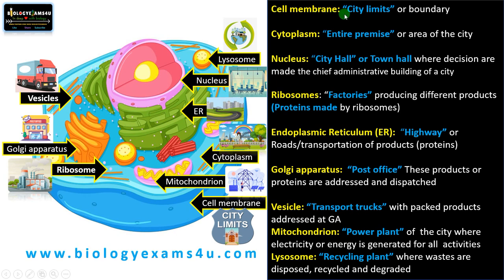Let me summarize: cell membrane can be compared to the city limits that ensures restricted entry, whereas cytoplasm is the environment of a cell or city. Nucleus can be compared to the city hall where decisions are drafted as laws for smooth governance. Ribosomes can be compared to factories producing products, whereas ER is the channel through which these products are transported. Golgi apparatus can be compared to the post office where products are addressed and dispatched. Vesicles can be compared to transport trucks. Mitochondrion is the powerhouse of the cell. Lysosome can be compared to a recycling plant where waste is disposed, recycled, and degraded.